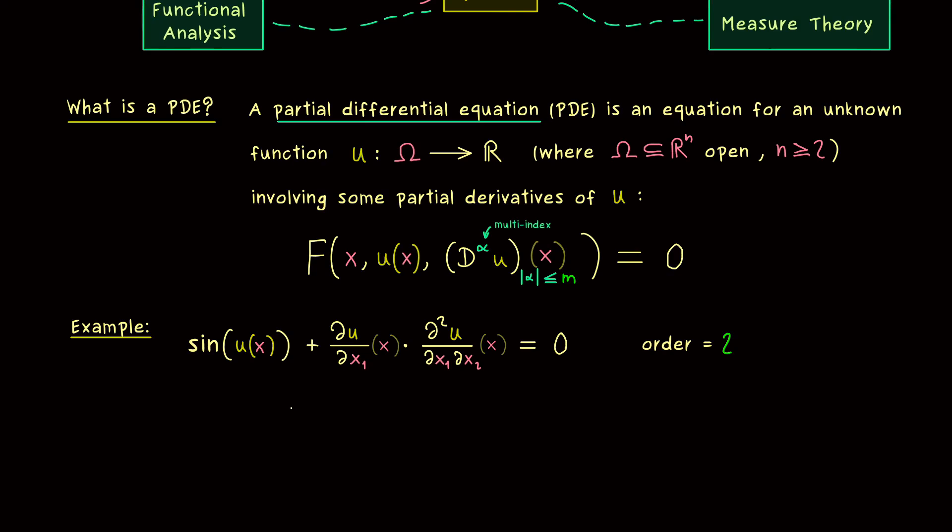So it just means that the highest order of partial derivatives that is involved is of order 2. So maybe let's look at a very general example where D^α u is involved. And now we could say we sum them up, up to order m.